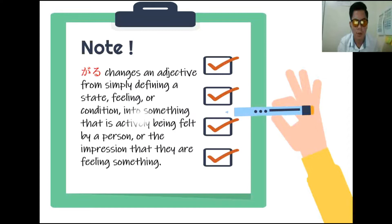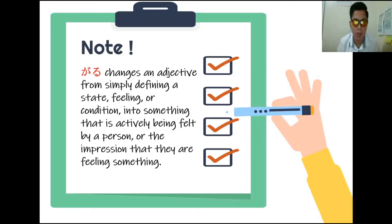Garu changes an adjective from simply defining a state, feeling, or condition into something that is actively being felt by a person, or the impression that they are feeling something. Ibig sabihin, presently na nararamdaman ng person. Sa madaling salita, si Garu is ginagamit natin according sa observation natin sa impression na pinapakita ng ibang tao. Hindi natin siya pwedeng gamitin sa sarili nating feelings.